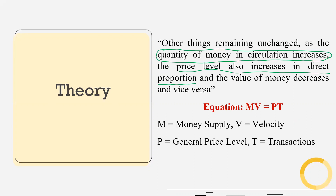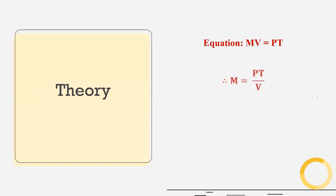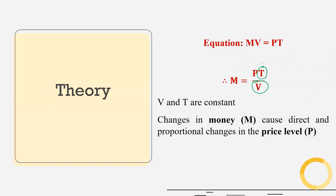Velocity is the number of times a single unit of money changes hands in an economy. Therefore, M = PT / V. We assume that V and T are constant — that is, velocity and transaction are constant. Therefore, changes in money cause direct and proportional changes in the general price level, P.